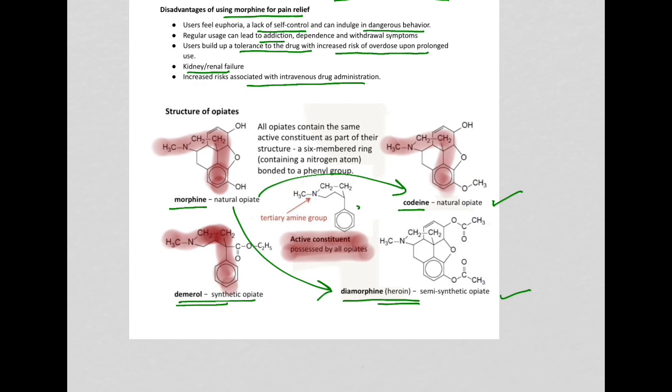You have a six-membered ring here, and this is called a tertiary amine group. You have nitrogen bonded to three groups.